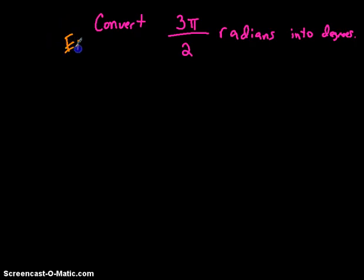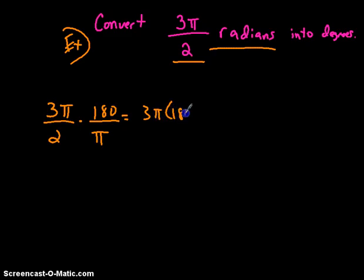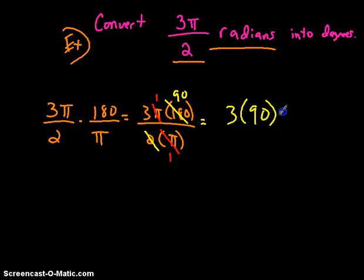This next example is not much different. If you're given 3 pi divided by 2 in radians and want to convert that into degrees, you multiply 3 pi divided by 2 by 180 over pi. You get 3 pi times 180 divided by 2 times pi. The pi's cancel out to be ones, and 180 divided by 2 cancels down to 90. So you wind up with just 3 times 90, which equals 270 degrees.